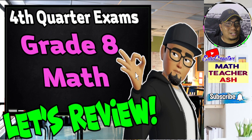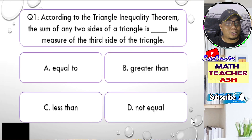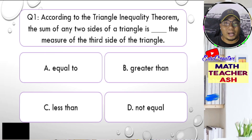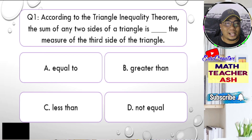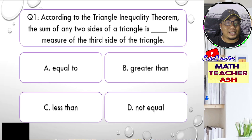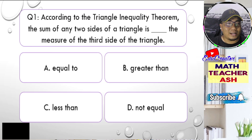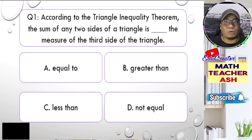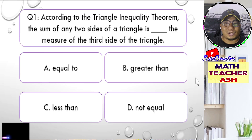Question number one. According to the Triangle Inequality Theorem, the sum of any two sides of a triangle is blank the measure of the third side of the triangle. Is it A, equal to; B, greater than; C, less than; or D, not equal? I will give you five seconds to think about your answer.